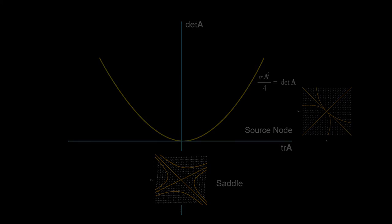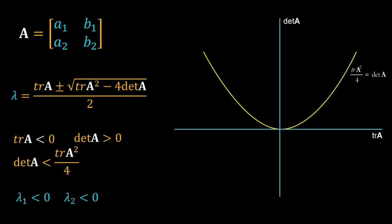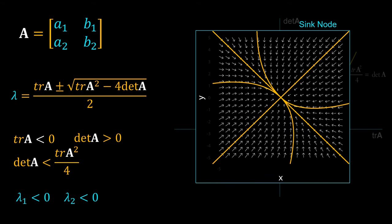Just the opposite happens if the trace is negative: trace(A) is negative, determinant of A is positive, and det(A) is less than trace(A) squared divided by 4 — so we are in this region. With these conditions both eigenvalues will be negative, and as discussed earlier the steady state will be asymptotically stable. The phase portrait looks as if the arrows are all flowing towards the steady state and vanishing there. That is why we call this steady state a sink node.